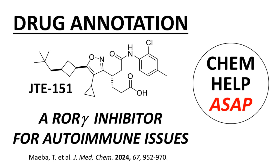Hello from ChemHelp ASAP. This video describes the discovery of JTE-151, a compound that is an inhibitor of ROR gamma, an orphan receptor that has been linked to certain autoimmune disorders. The video reports the discovery program of JTE-151 as described in a drug annotation article in the Journal of Medicinal Chemistry by scientists at the Central Pharmaceutical Research Institute in Osaka, Japan.